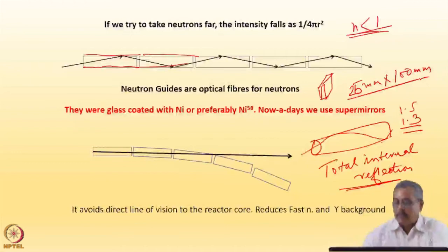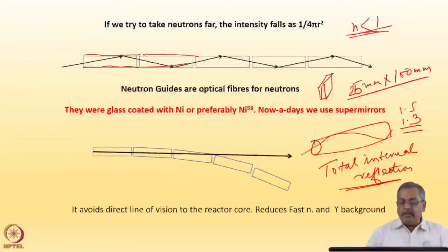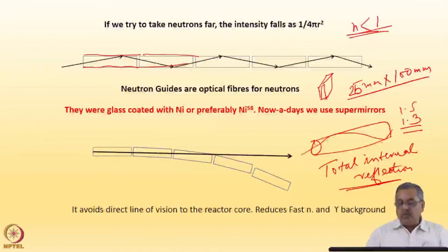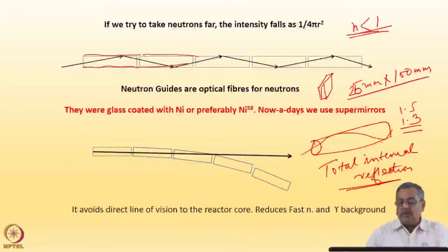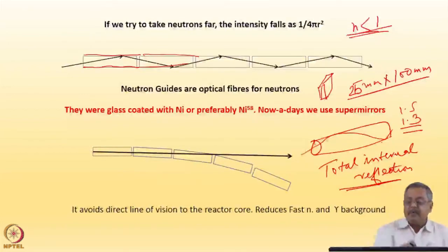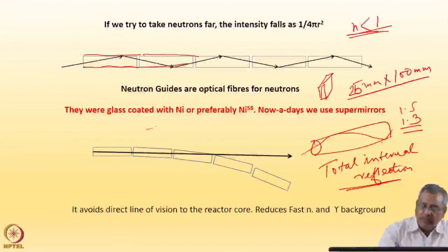I will show the photograph of the guides and experimental setups in later talks. Especially for experiments needing low energy neutrons, neutrons are taken out using neutron guides from the reactor hall. There are several advantages of using neutron guides — instead of the 1 over 4π r² loss, because neutrons travel by total external reflection, you can achieve 60 to 70 percent transmission.